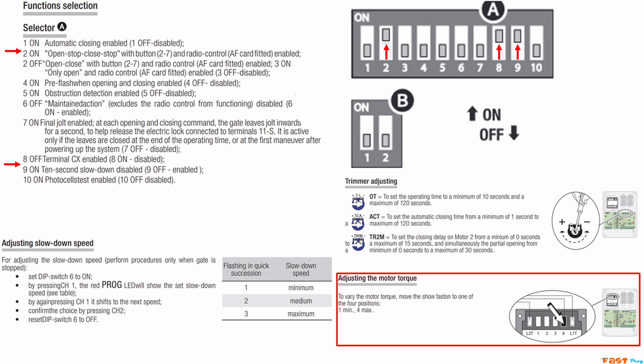Now, let's talk about motor torque adjustment. It's simple: the black wire connected to 1 means minimum power to the motor. Connected to 4, it means maximum power. Adjust based on the weight of your gates.